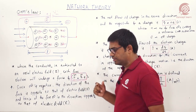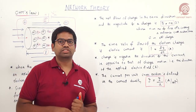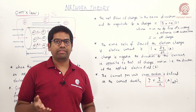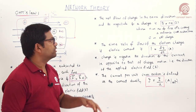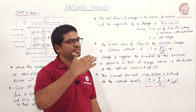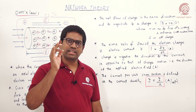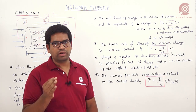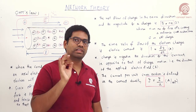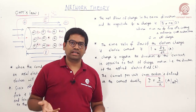The net flow of charge is in the same direction as the electron direction. The total charge is Q = ne, where n is the number of electrons crossing a reference cross-section area and e is the electron charge. Each electron carries the same charge of 1.602 × 10⁻¹⁹ coulombs; the total charge varies based on the number of electrons.